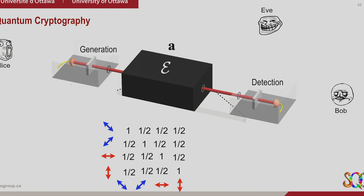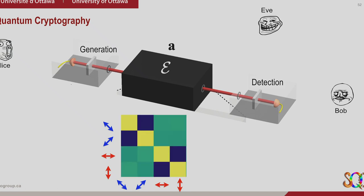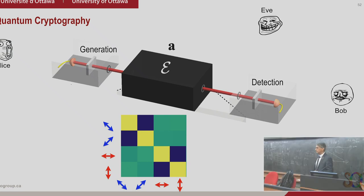I usually show it with this color plot — it's like an avocado coloring. Yellow means close to one, black means zero, and between these two, which is greenish, is some value between zero and one.